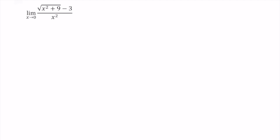And we're going to use a little bit of an algebraic trick. We're going to multiply both the numerator and the denominator by the conjugate of the numerator. That is, we're rationalizing the numerator.